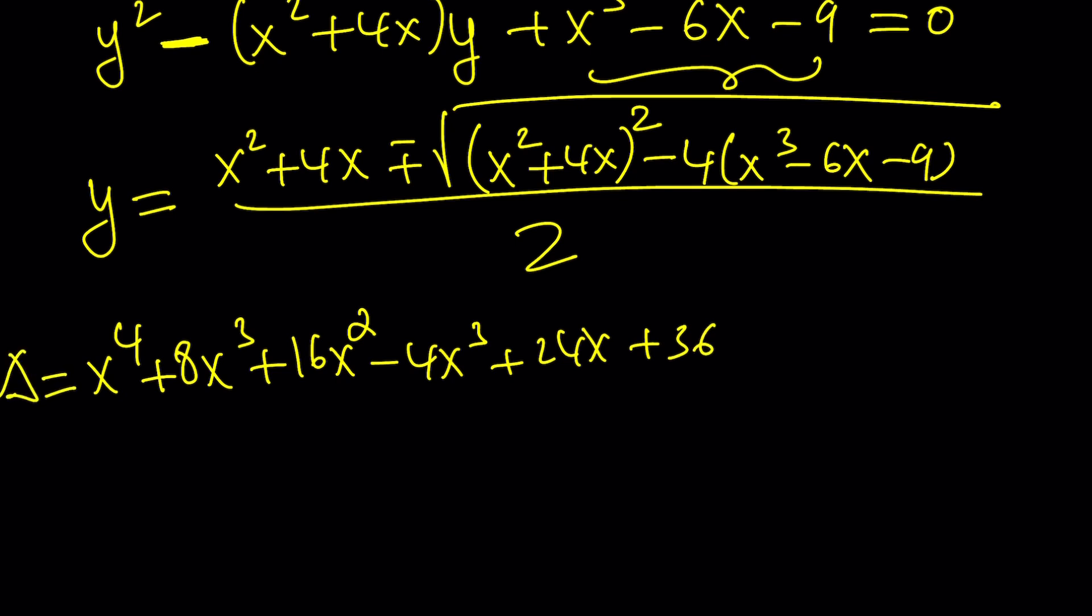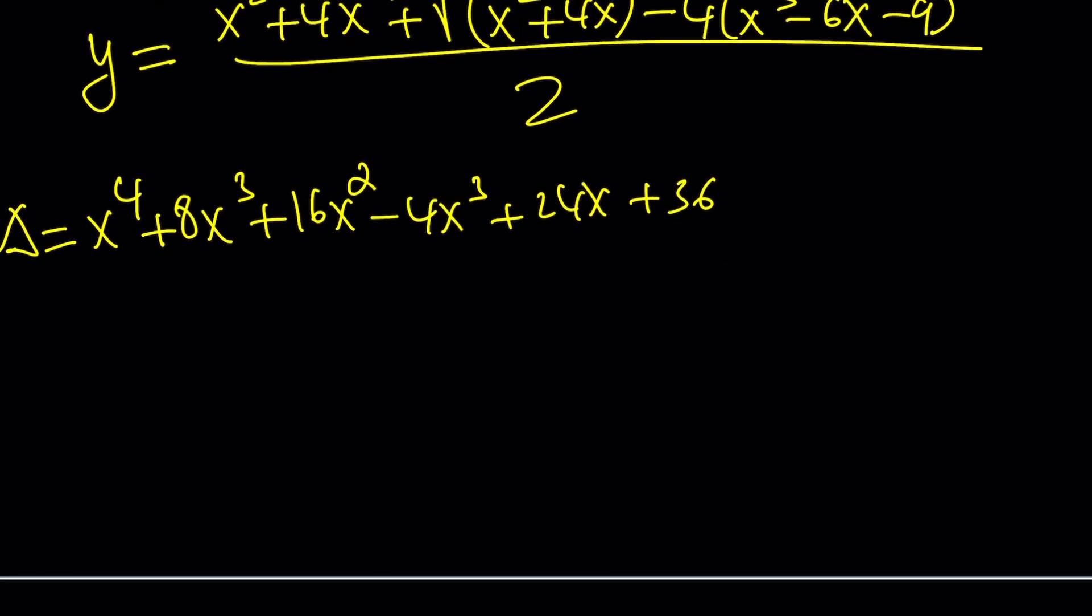In other words, delta. If I can simplify delta, I can just plug it in. So delta from here, the discriminant, if you combine like terms: 4x³ + 16x² + 24x + 36. And I need to square root that.